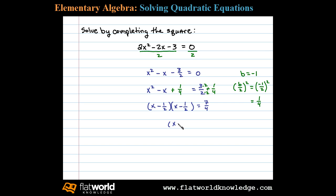And we have x minus 1 half squared equals 7 fourths. We can then extract the roots. Taking the square root of both sides, don't forget the plus or minus, we're left with x minus 1 half equals plus or minus the square root of 7 fourths.